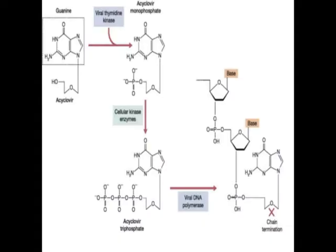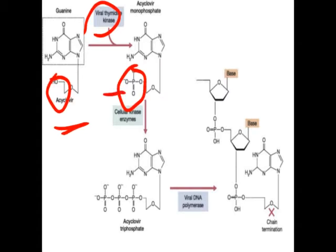In the diagram, you can see the guanine part of acyclovir. The viral thymidine kinase enzyme causes phosphorylation at this position, forming acyclovir monophosphate. Then the cellular kinase causes further phosphorylation, attaching two phosphate groups to give acyclovir diphosphate. Another phosphorylation step yields acyclovir triphosphate — one, two, three phosphate groups.